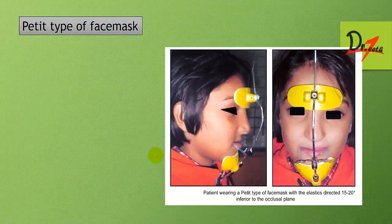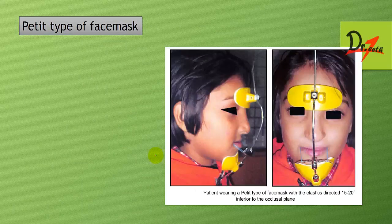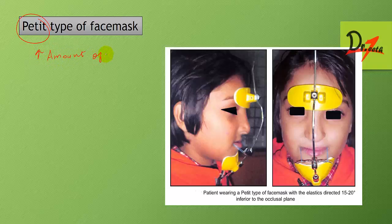The pitted type face mask is named after the person who modified the Diller face mask. The modification increased the amount of force generated, which decreased the overall treatment time. The appliance is made up of a single midline rod connecting the forehead and the chin.